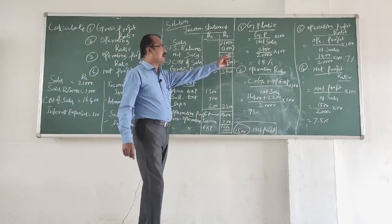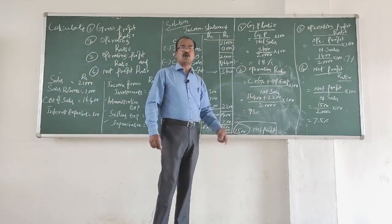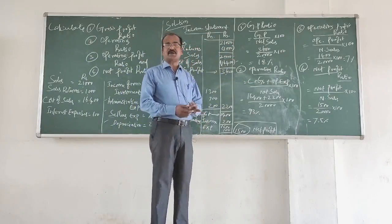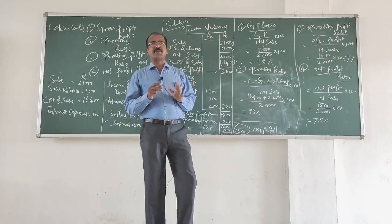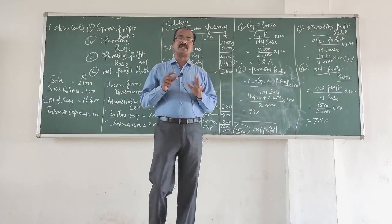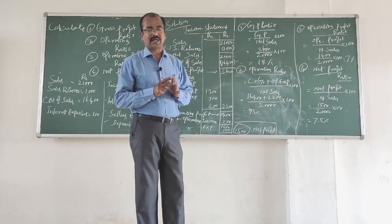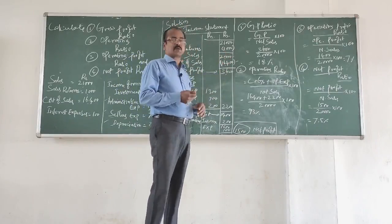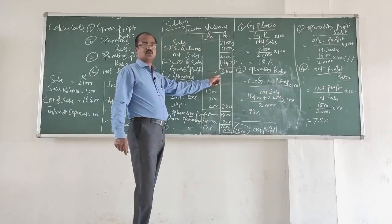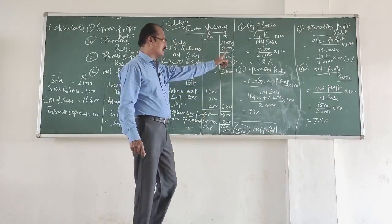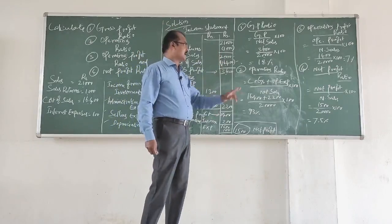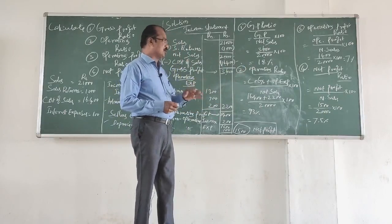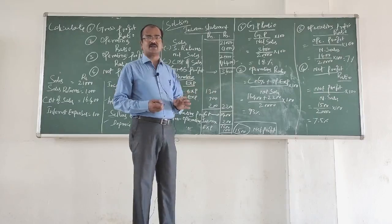The first ratio is gross profit ratio. The formula is: gross profit divided by net sales, multiplied by 100. Gross profit from our income statement is 3,600, divided by net sales of 20,000, multiplied by 100 — this gives us 18% as the GP ratio.